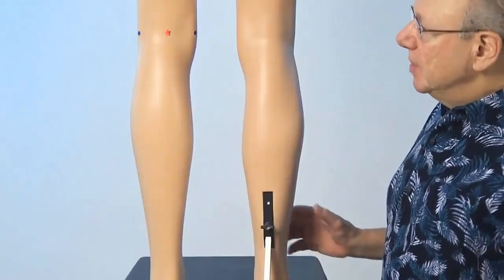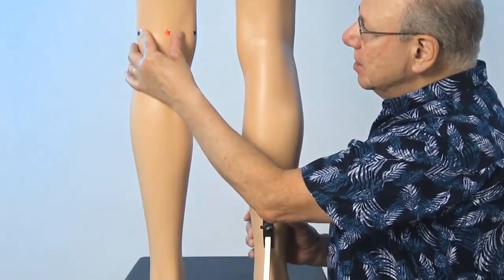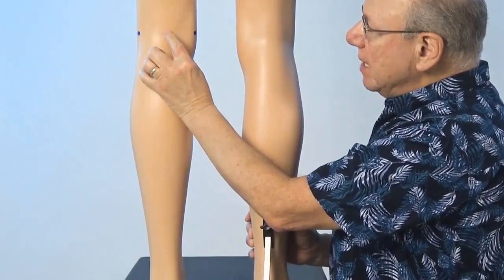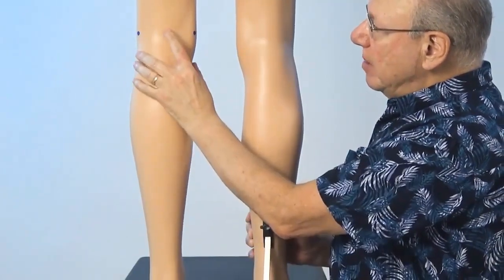To locate bladder 40, find the midpoint of the back of your knee right about here.